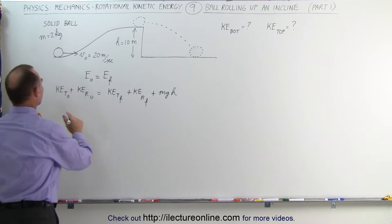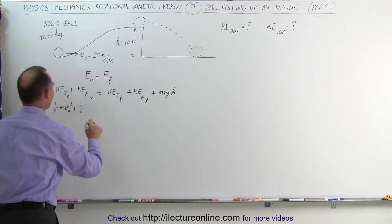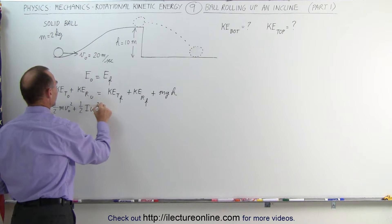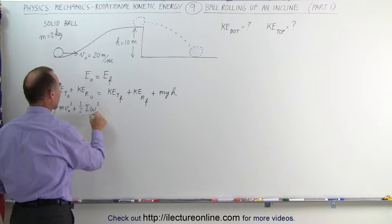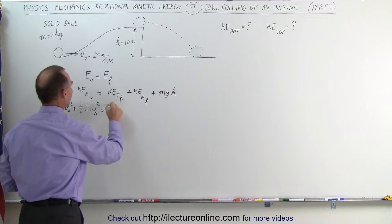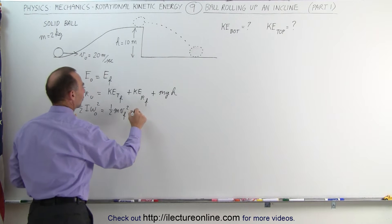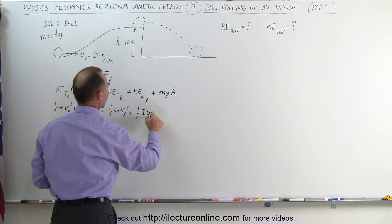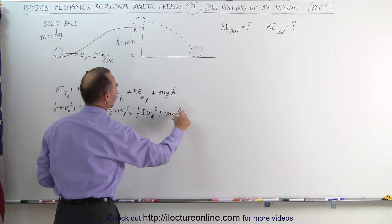Plugging in what these are, we have one-half MV initial squared, plus one-half I omega initial squared. This is equal to one-half MV final squared, plus one-half I omega final squared, plus the potential energy MGH.